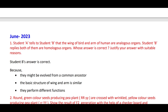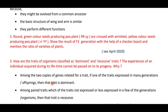Student A tells Student B that the wing of a bird and the arm of a human are analogous. Student B replies that both of them are homologous. Student B's answer is correct because they might have evolved from a common ancestor — the basic structure of the wing and arm is similar, yet they perform different functions. Therefore they are homologous organs.